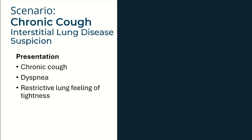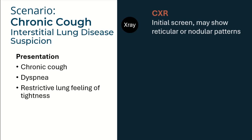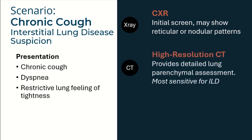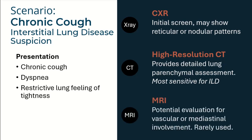The final scenario is for a patient presenting with a chronic cough with suspicion of interstitial lung disease. This chronic cough, along with shortness of breath and the feeling of tightness when breathing and other associated symptoms, again begins with a chest X-ray. This can show some hallmark signs as well as rule out or identify other diagnostic considerations. The next level is high-resolution CT, or HR-CT, which is a CT scan with higher resolution and thinner slices, providing more detailed images of the smaller pulmonary structures. Finally, if additional imaging is needed — though this is rare — an MRI would be the next logical step.